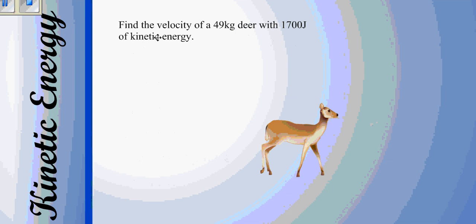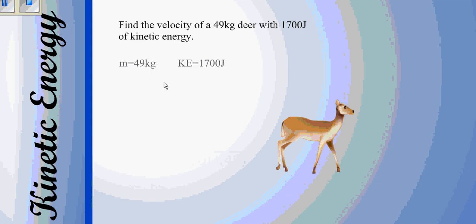If we wanted to do a harder problem, say, finding the velocity of a 49 kilogram deer with 1700 joules of kinetic energy, we're going to do it much the same way. We write down what we know, and then we write down our formula.